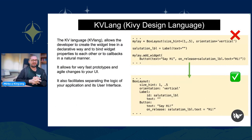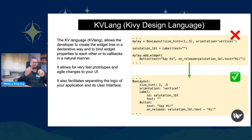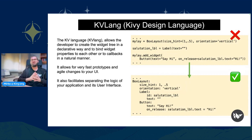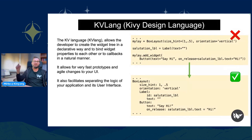The Kivy language allows the developer to create a widget tree in a declarative way and to bind widget properties to each other or to code. It allows for very fast prototypes and agile changes to your UI, and it facilitates separating the logic of your application from its user interface. When writing Python things, you'd find yourself mixing everything in a single file and it becomes a mess — so please use the Kivy language to separate your logic from your UI. As shown in the example, we're creating a BoxLayout in Kivy language and placing a Label and a Button in it.